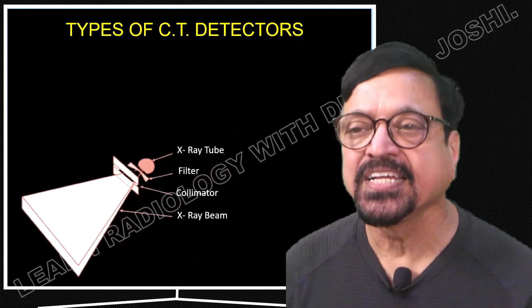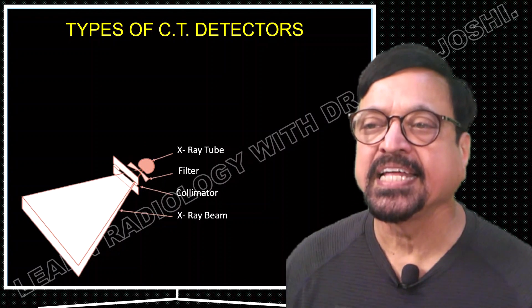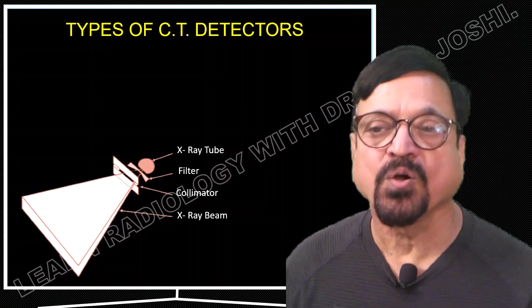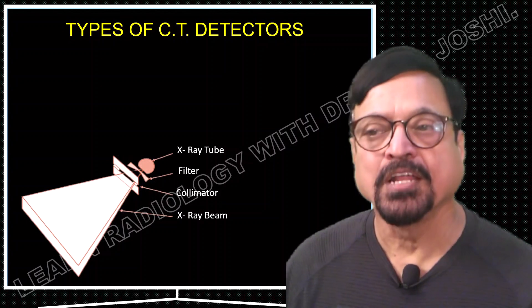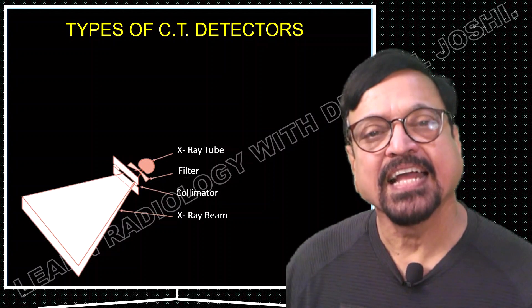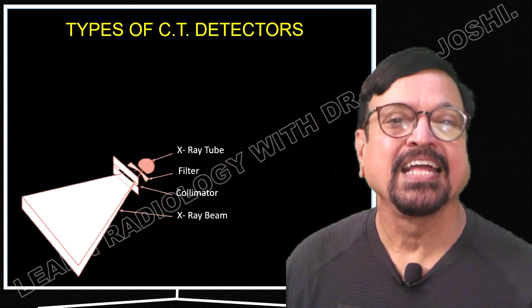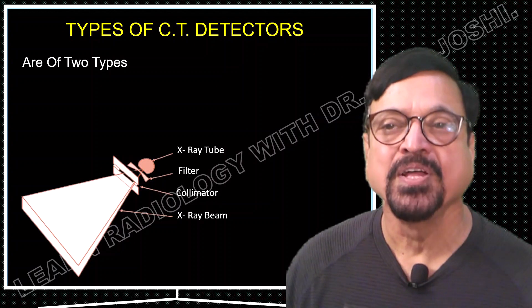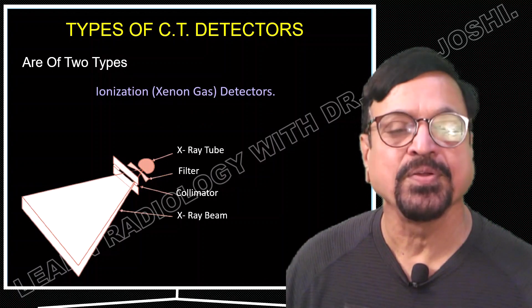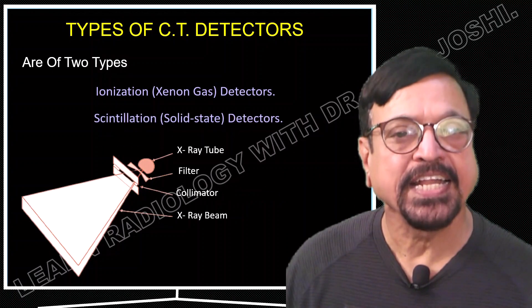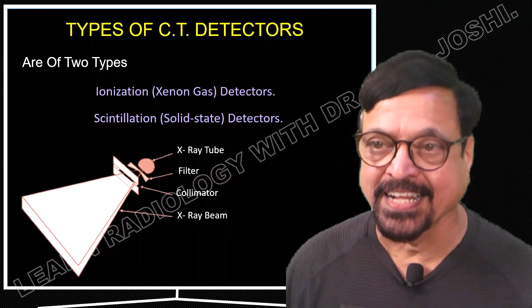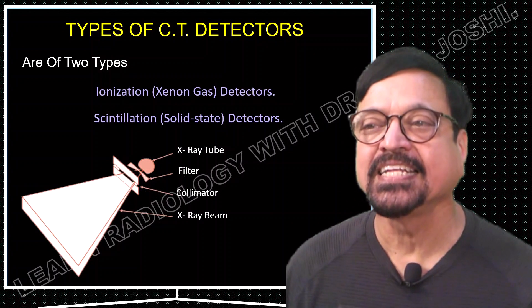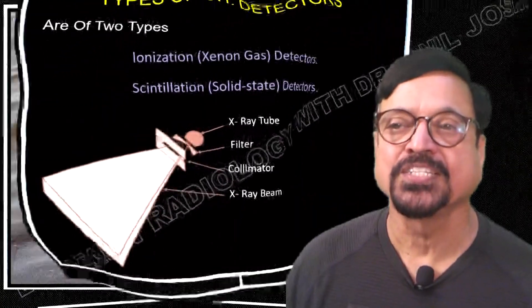Further, looking at the detector setup: on one side there is the tube, then the filter, collimator, and X-ray beam — all contributing to image formation. A detector should receive a properly collimated, properly positioned, and properly shaped X-ray beam, which all these structures provide. There are different lectures covering each component. As for detector types, there are two categories: ionization detectors and scintillation detectors, popularly called gas detectors and solid-state detectors.